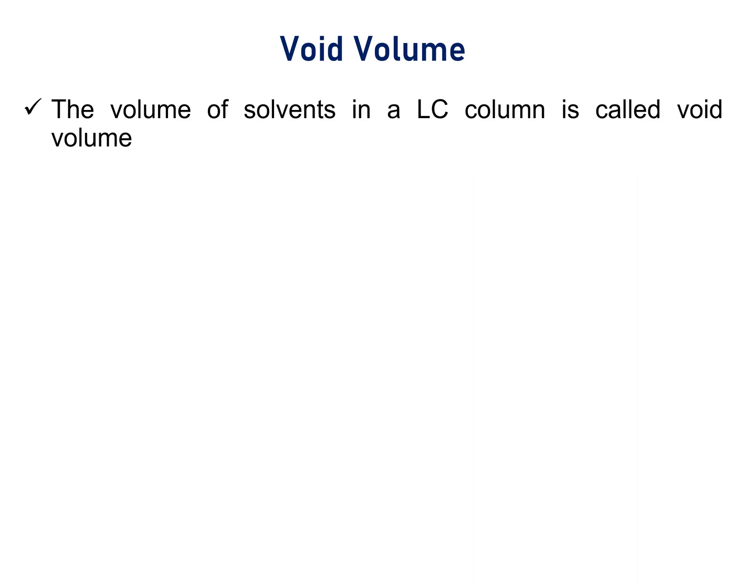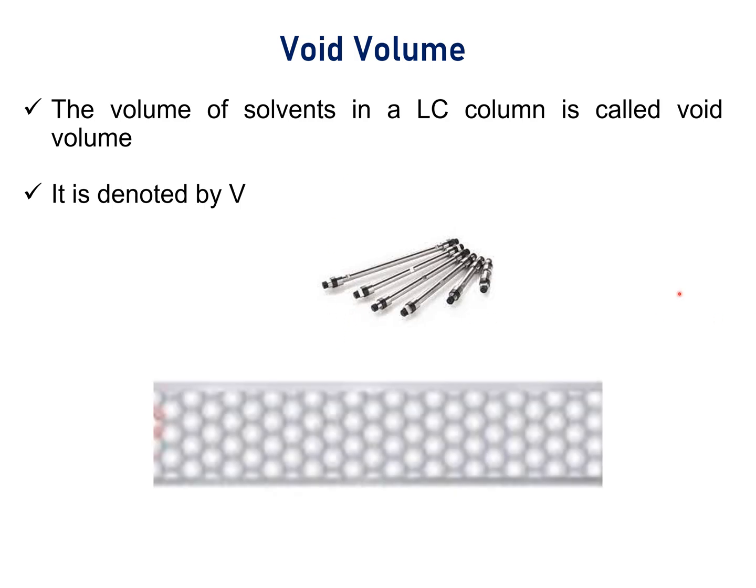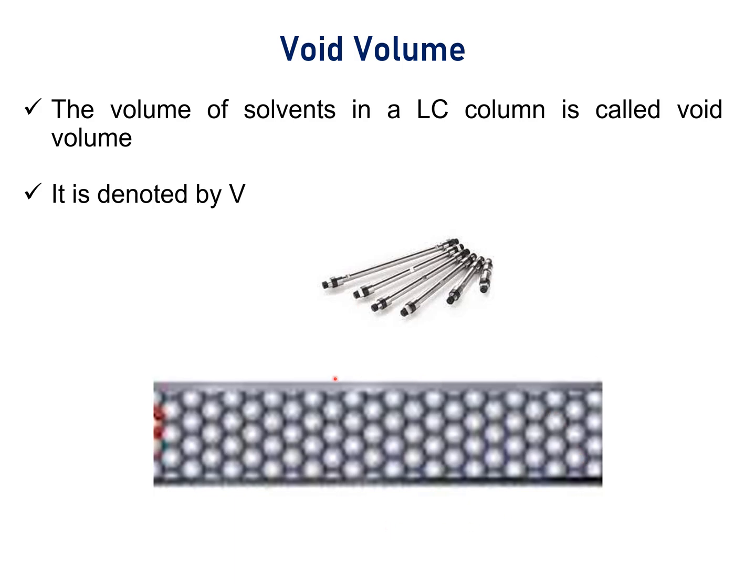Void Volume. The volume of solvents in a liquid chromatography column is called void volume. It is denoted by V. These are HPLC columns. Each HPLC column is filled with stationary phase. In between the stationary phase, there is empty space. These are the empty spaces, also called void space.